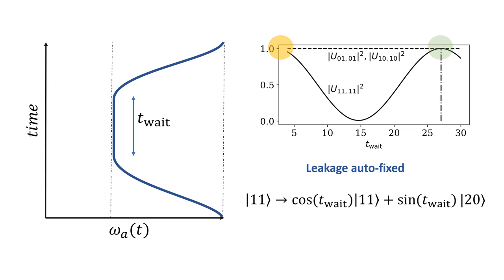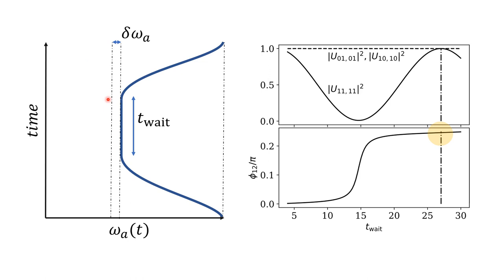Interestingly, we can easily correct these type of errors. We simply need to introduce a waiting time once we have reached the desired frequency. When we wait around this position, the same mechanism that causes the leakage autocorrects the errors and brings back the qubit to the desired 1-1 state. Moreover, we can also tune the frequency that we reach during the passage. By slightly detuning from the crossing point, we can also adjust the phase that is acquired, making it closer to the pi over 4 or any other phase that we want to create.